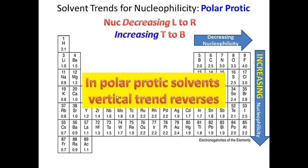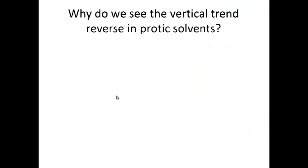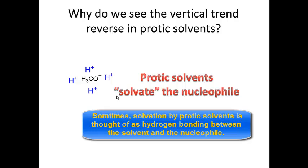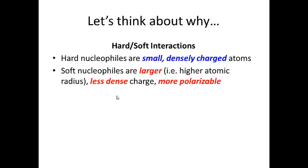In a polar protic solvent, the vertical trend reverses. From top to bottom, nucleophilicity is now increasing. Why do we see this reversal in the vertical trend for nucleophilicity when using a polar protic solvent? The answer is that polar protic solvents solvate the nucleophile. The protons on the protic solvent surround that nucleophile, and when they do that, they make the nucleophile less reactive.